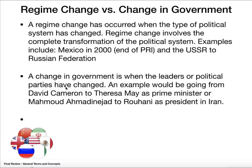Regime change versus change of government. If you have a regime change, the entire system is different — it's a complete transformation. For example, the PRI was in power in Mexico for 70+ years; in 2000 PRI was removed — that's regime change. The USSR going from the Soviet Union to the Russian Federation is also regime change. A change of government is when you just have a new political party in office or a new leader — going from David Cameron to Theresa May, or from Ahmadinejad to Hassan Rouhani in Iran, those are changes in government.